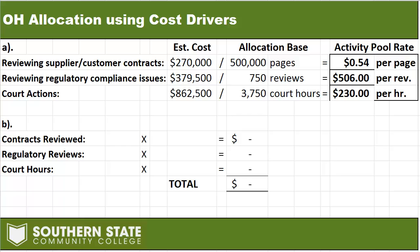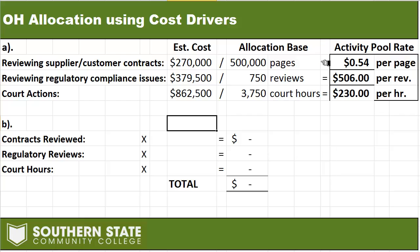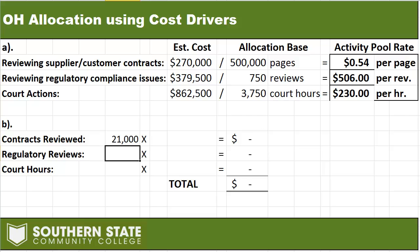Let's move on to letter B. Going back to the prompt, it wants us to tell them what amount would be charged to a department — could be accounting, human resources, marketing, whatever. What are we going to charge a department that had 21,000 pages of contracts reviewed, made 27 regulatory review requests, and consumed 315 professional court hours?